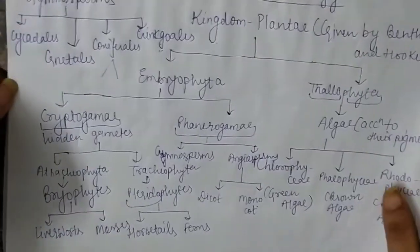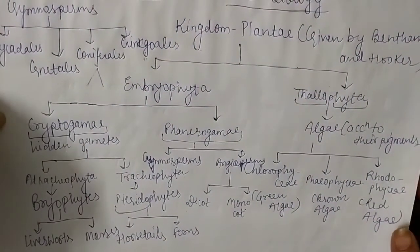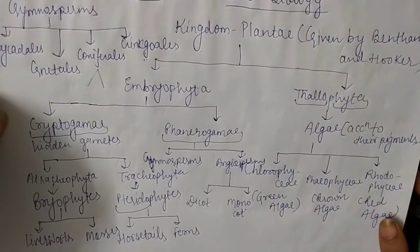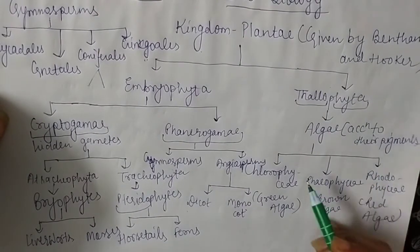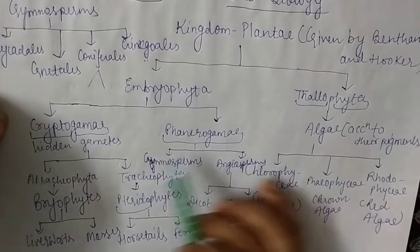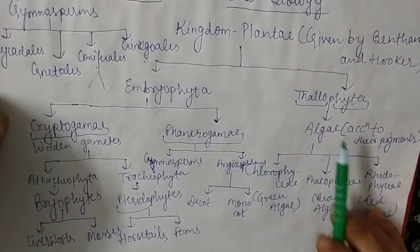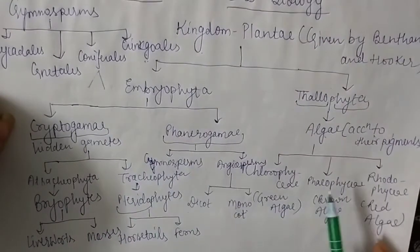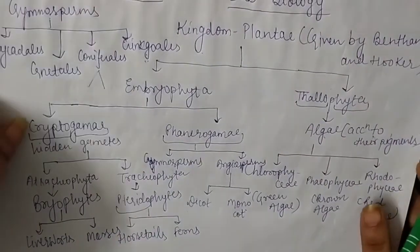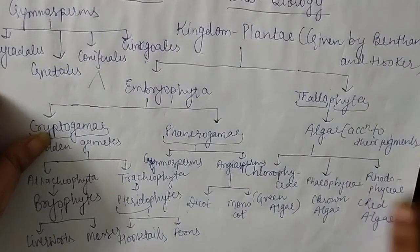This is the complete Kingdom Plantae classification given by Bentham and Hooker. Next time we will discuss algae, and in this chapter we will study one by one all the categories: first algae, then Bryophyta, then Pteridophyta, then Gymnosperms, then Angiosperms. Next session I am going to start with algae. Till then, goodbye and have a beautiful day. Thank you.